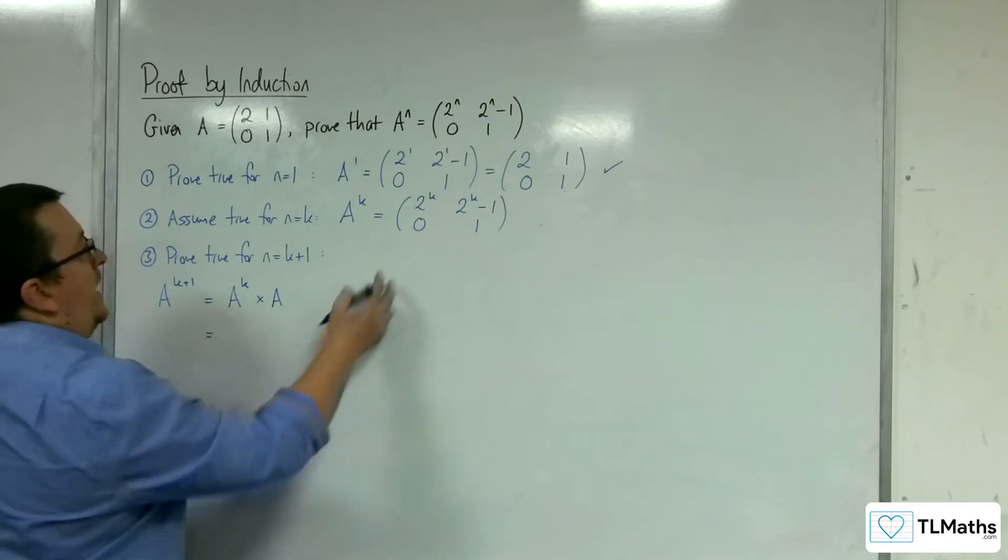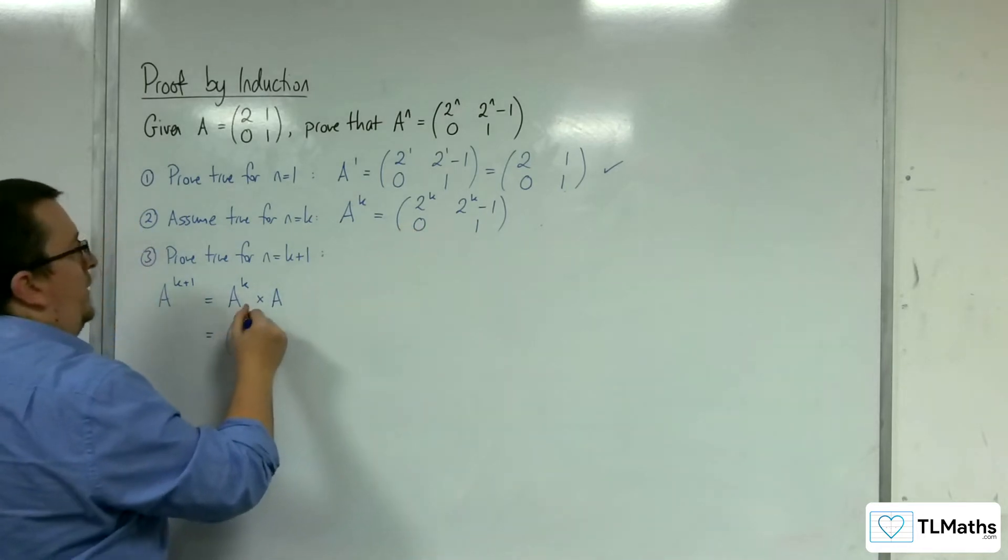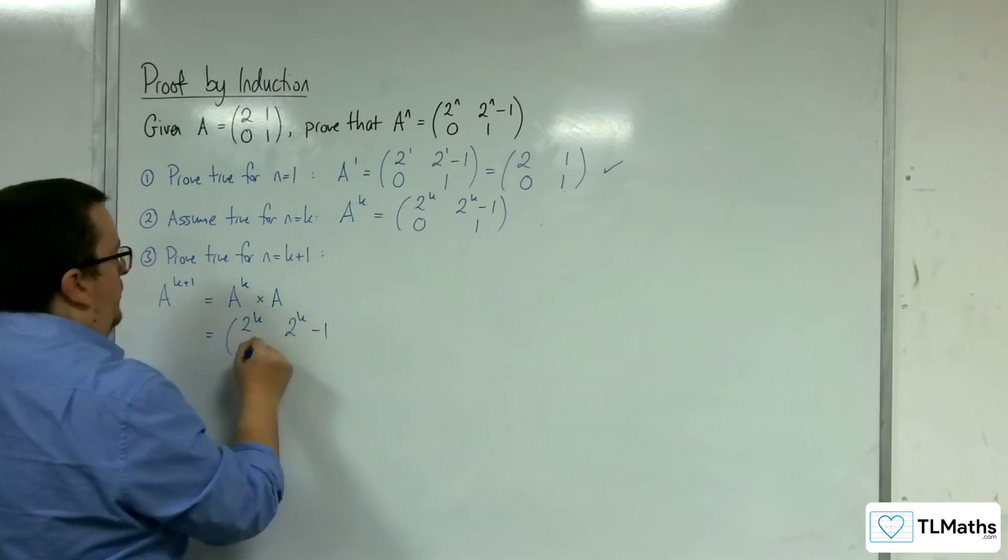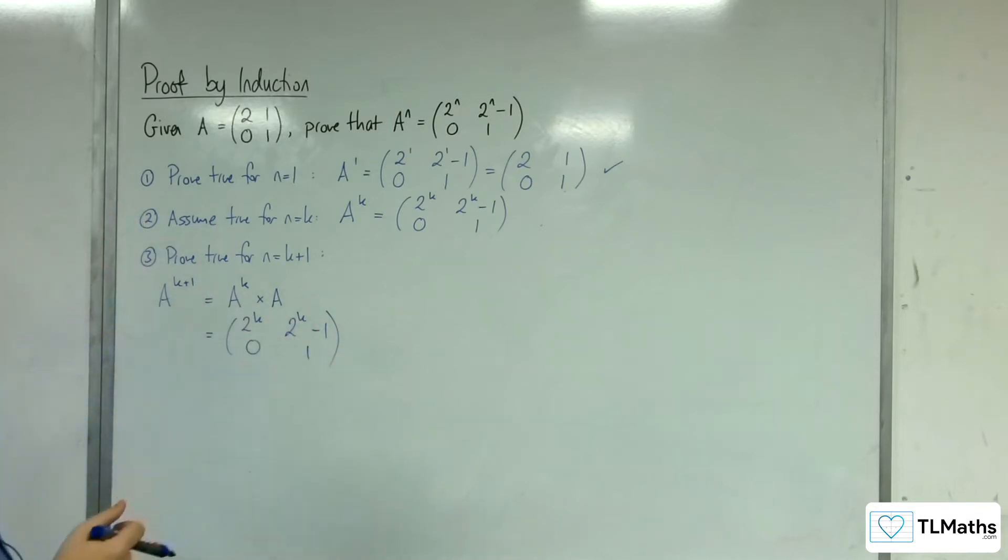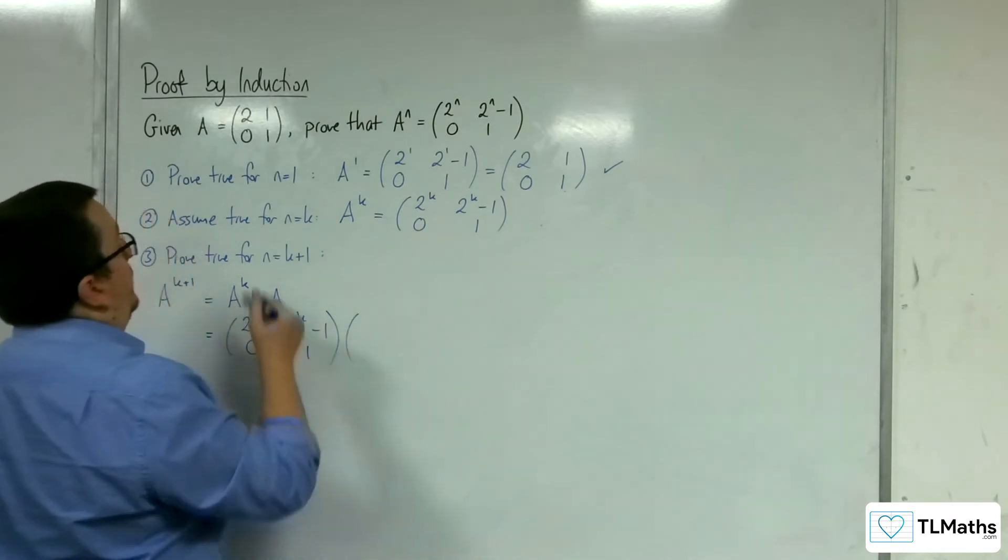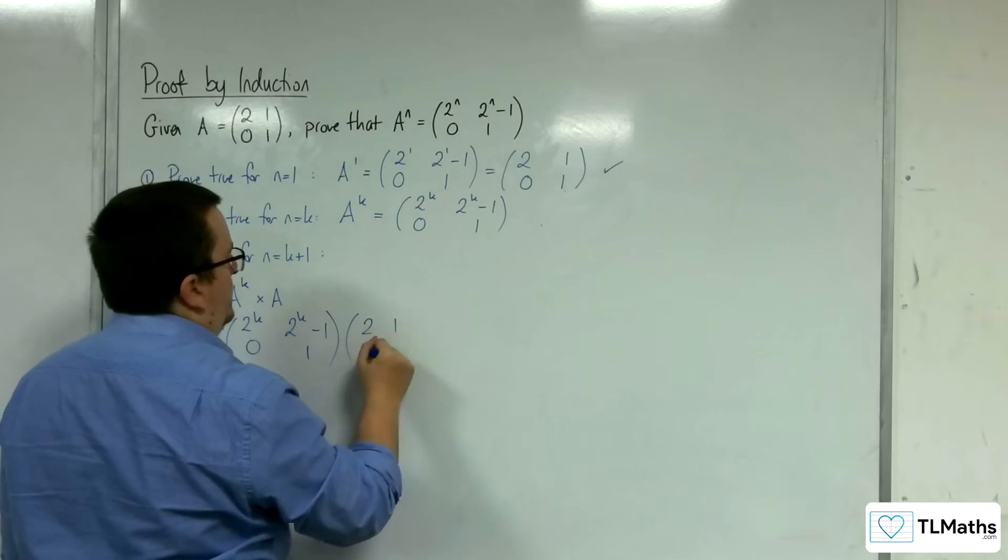Now, A^k is [2^k, 2^k - 1; 0, 1]. We're multiplying that by the matrix A, which is [2, 1; 0, 1].